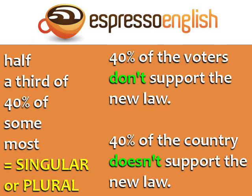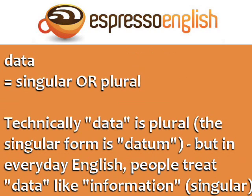'40% of the voters don't support the new law' — 'don't' is the plural form because 'voters' is plural. '40% of the country doesn't support the new law' — 'doesn't' is the singular form because 'country' is also singular.